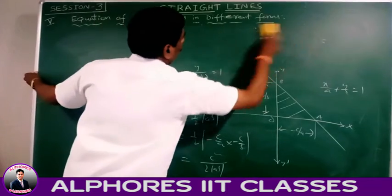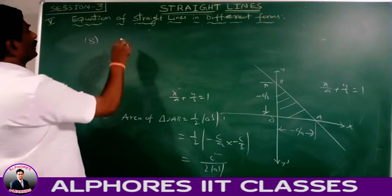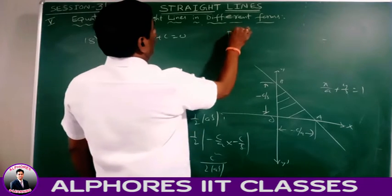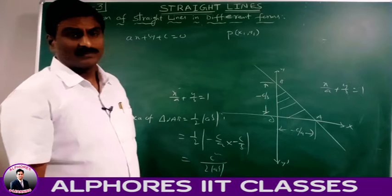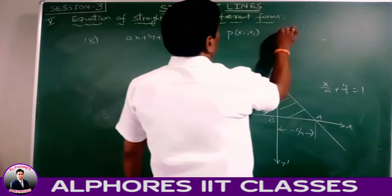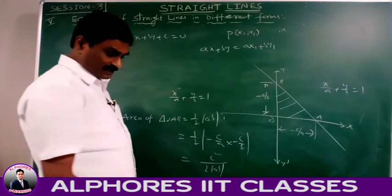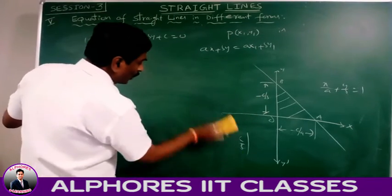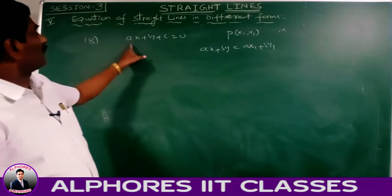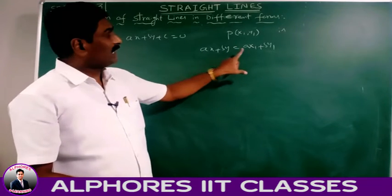Point 8: the equation of the line which is parallel to ax + by + c = 0 and passing through the point P(x₁, y₁) is ax + by = ax₁ + by₁.